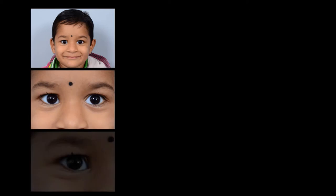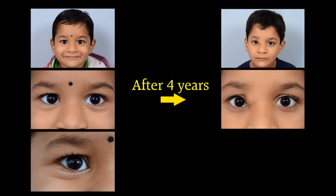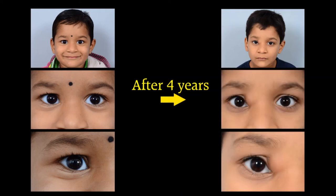Conservative observation may be adopted when cysts are small, asymptomatic, and a minor cosmetic blemish. However, with functional and cosmetic implications and the possibility of spontaneous or traumatic rupture, surgical excision becomes the treatment of choice.